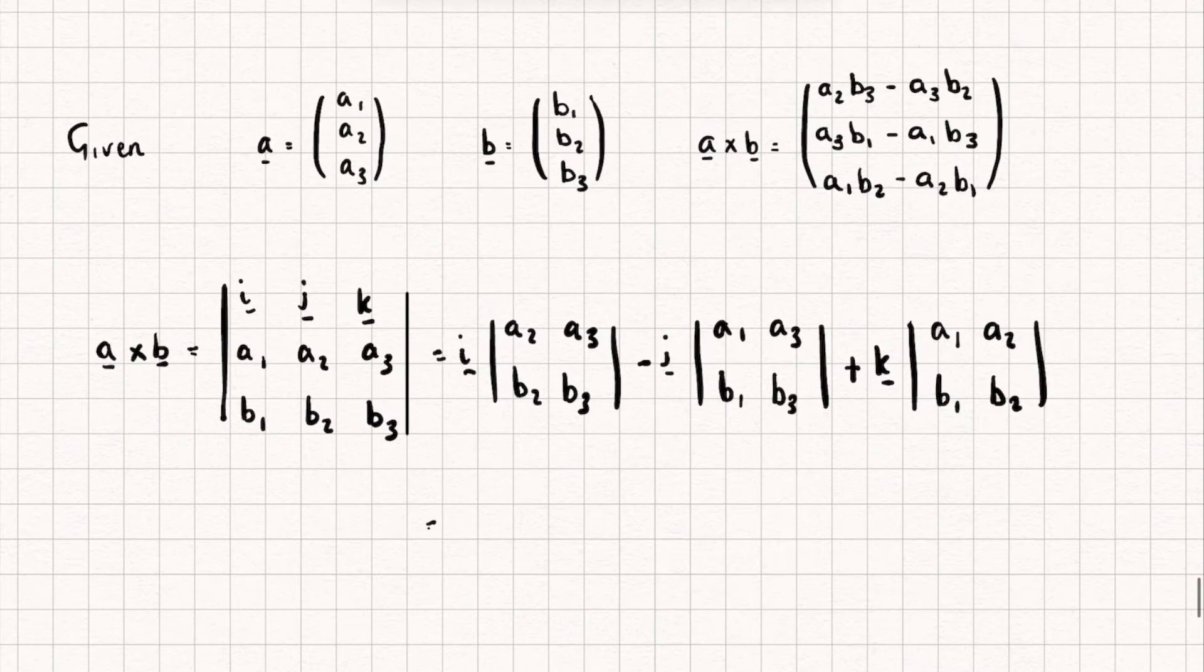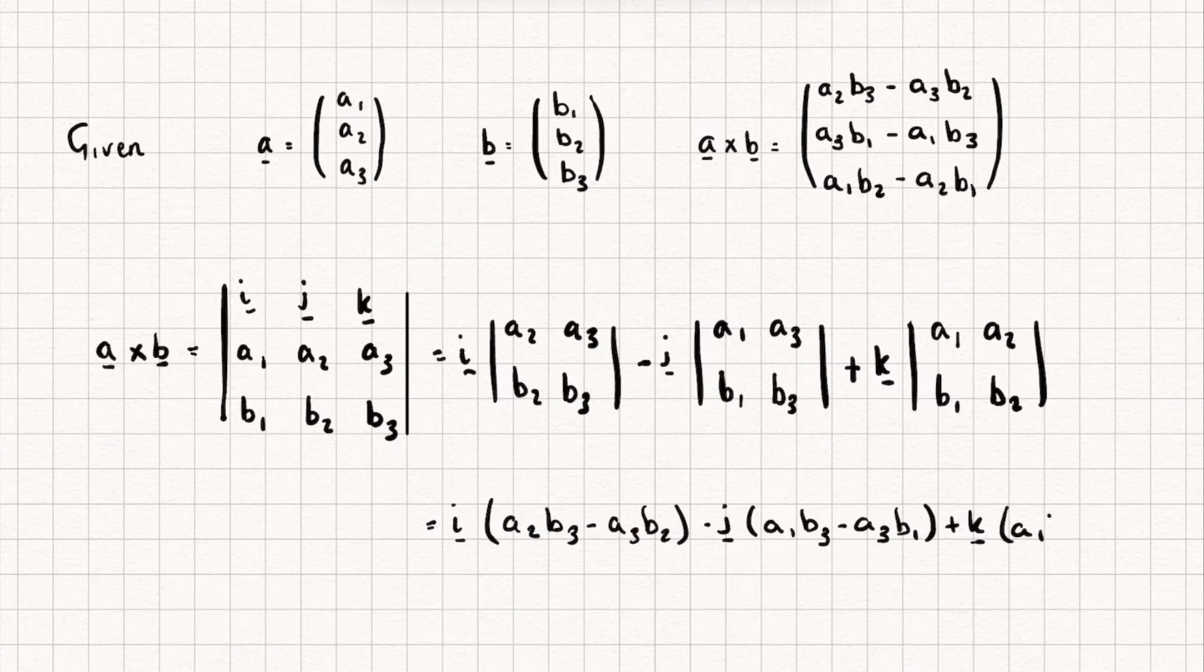Let's now calculate this, so we're going to get i multiplied by (a₂b₃ - a₃b₂), minus j multiplied by (a₁b₃ - a₃b₁), plus k multiplied by (a₁b₂ - a₂b₁).